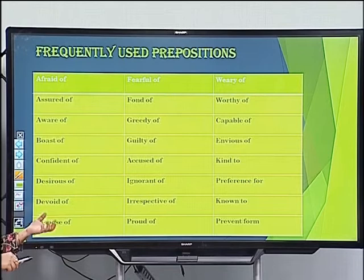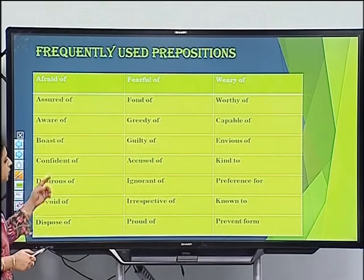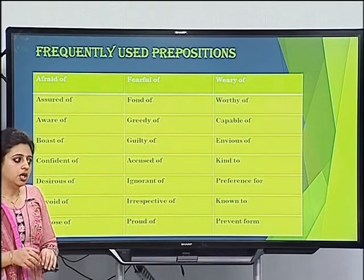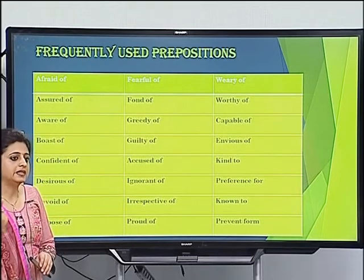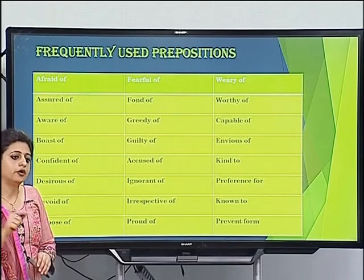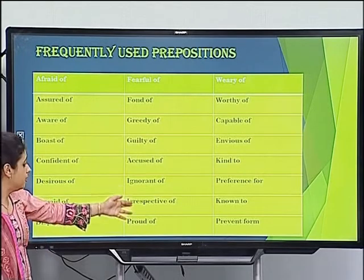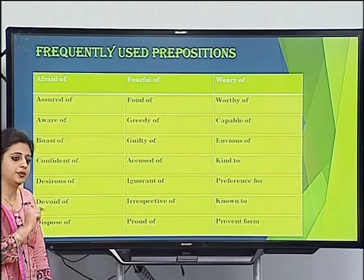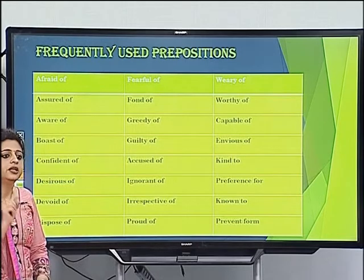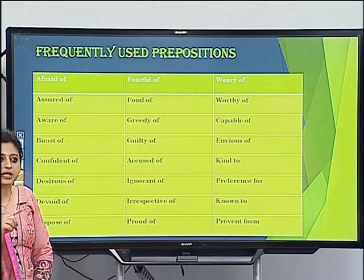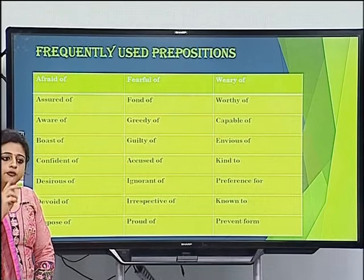'Envious of.' 'Kind to' — she is very kind to me. So 'kind' takes 'to' after it. 'Preference for' — I have preference for coffee rather than tea. Note: 'prefer' takes 'to' — I prefer coffee to tea — but 'preference' takes 'for.' So preference for, but prefer to.